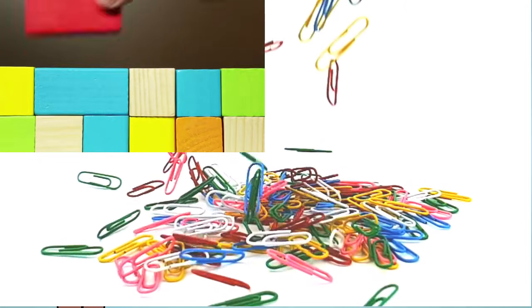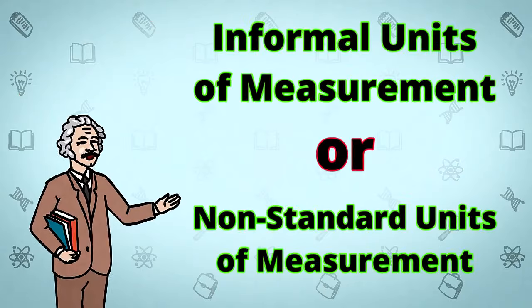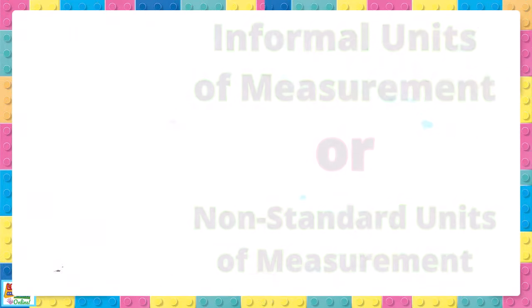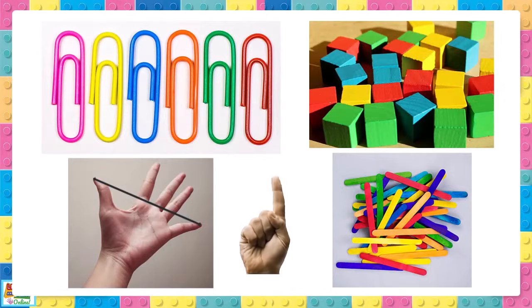If we use items such as these to measure the length of objects, we call them informal units of measurement or non-standard units of measurement. This is because they are not the typical units we would normally use to measure the length of objects.